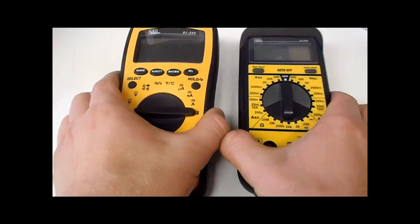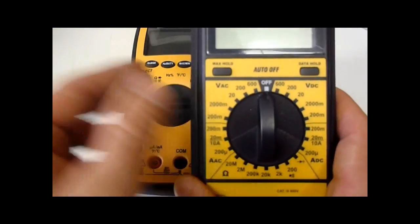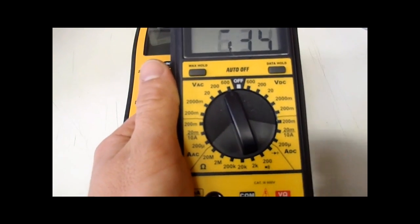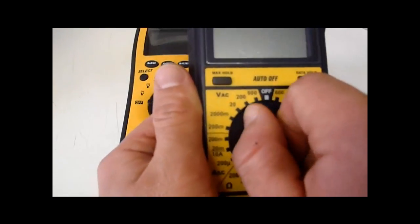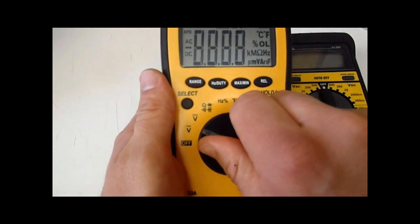And within the digital multimeter category, there's two types of multimeters. There's the manual ranging, where you have to select a subcategory in volts. So if you want to measure a 20 volt source, you have to go to the 20 volt source. And then there's the auto ranging, which automatically selects the appropriate setting once you're in the category.